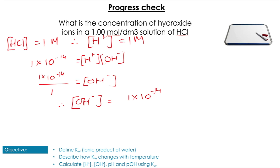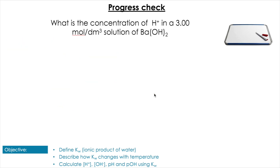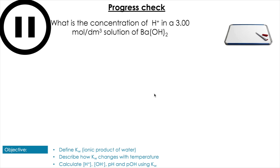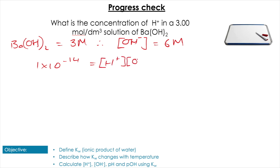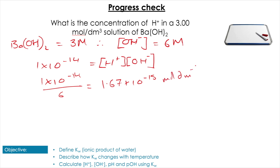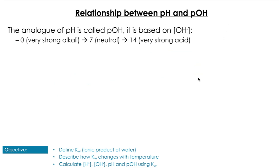One more for good measure: find [H⁺] in a 3 mol dm⁻³ solution of barium hydroxide — pause the video. Barium hydroxide has two OH⁻ per molecule, so [OH⁻] = 6 mol dm⁻³. Therefore [H⁺] = 1 × 10⁻¹⁴ / 6 = 1.67 × 10⁻¹⁵ mol dm⁻³.